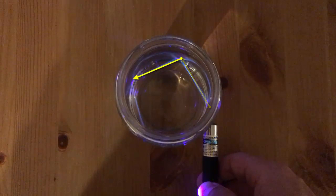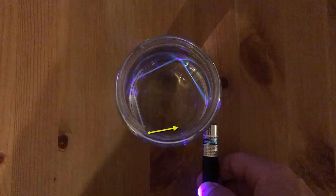The light bends when it enters the water and reflects off the glass multiple times until eventually it gets so diffuse we can't see it anymore.